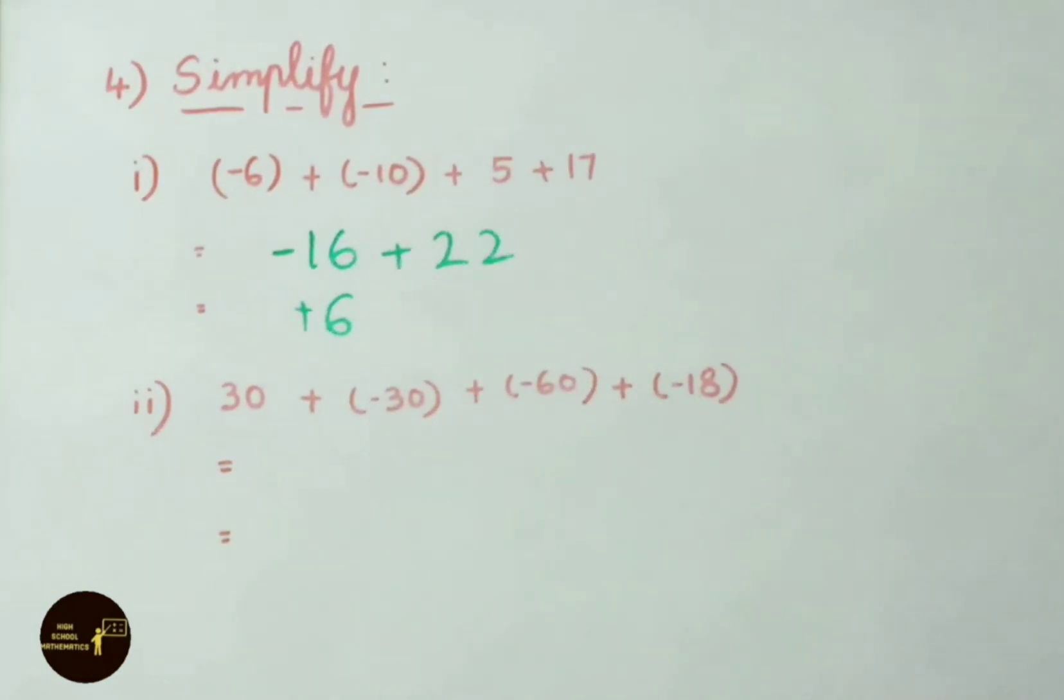See the second question now. 30 plus minus 30 plus minus 60 plus minus 18. 30 minus 30, 0 plus minus 60 minus 18. Same sign we shall add. So 60 plus 18 is 78. Their sign is minus. 0 plus minus 78, that is minus 78.